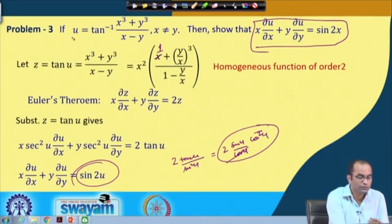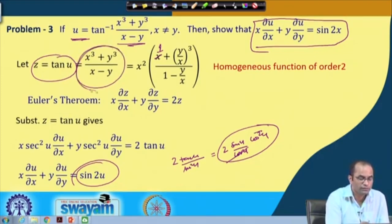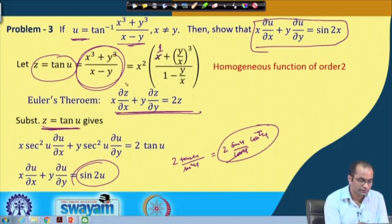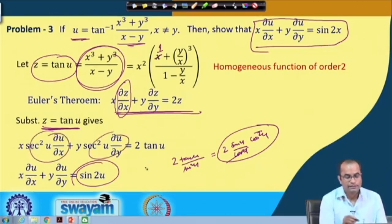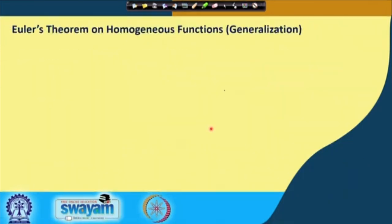The key insight is that u = tan⁻¹((x³+y³)/(x−y)) is not itself homogeneous, but by defining z = tan u = (x³+y³)/(x−y), which is homogeneous of order 2, we applied Euler's theorem to z and then used the chain rule to recover the result in terms of u.